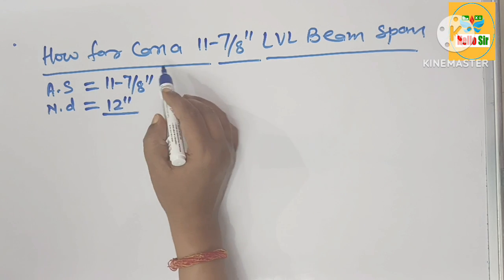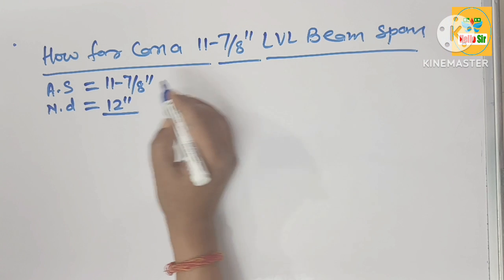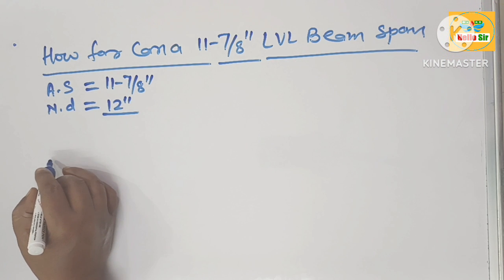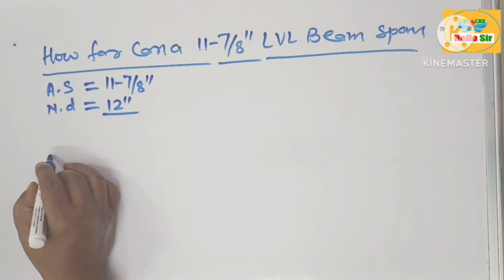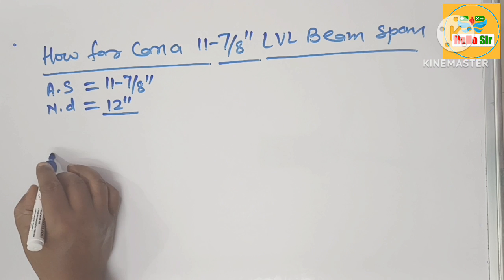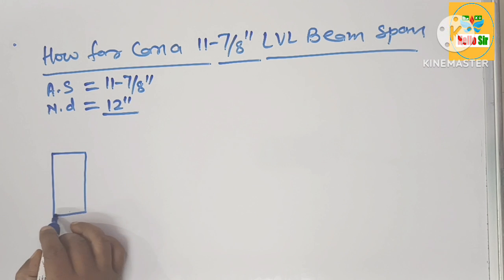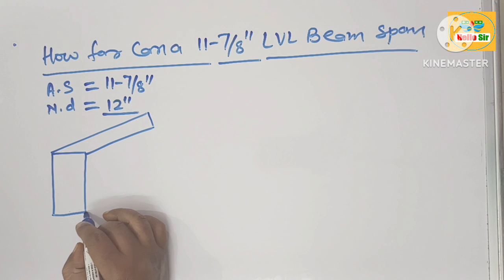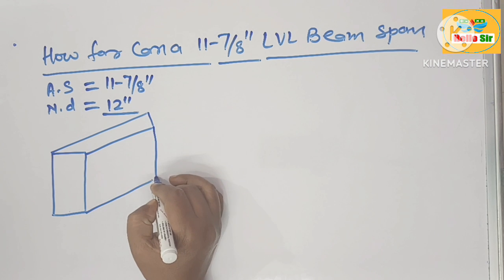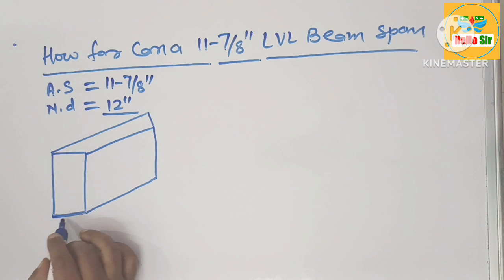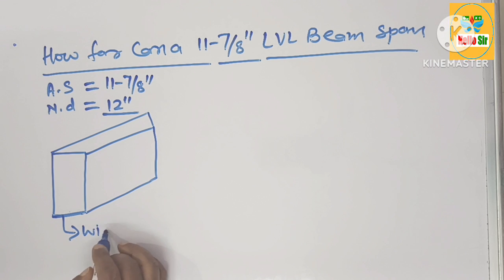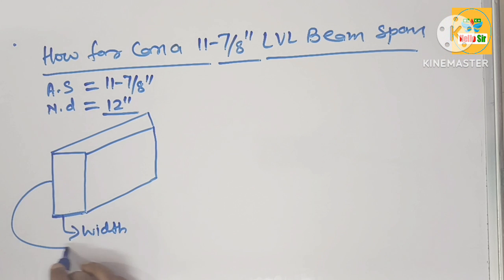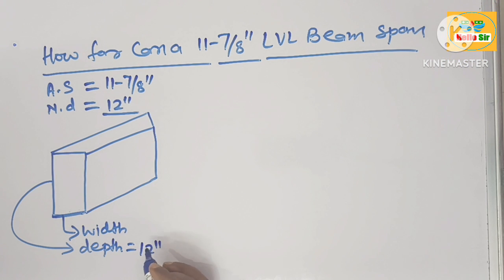That's why it's also known as a 12 inch LVL beam. Suppose we make a rough diagram to understand the size of LVL. This is the LVL beam structure - this one is the width and this one is the depth. The nominal depth of this LVL beam is about 12 inches.